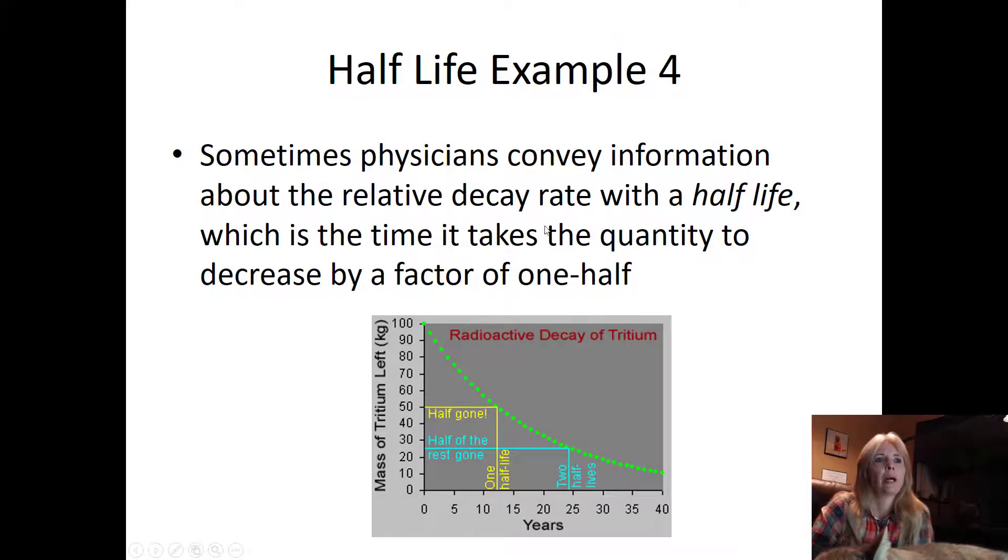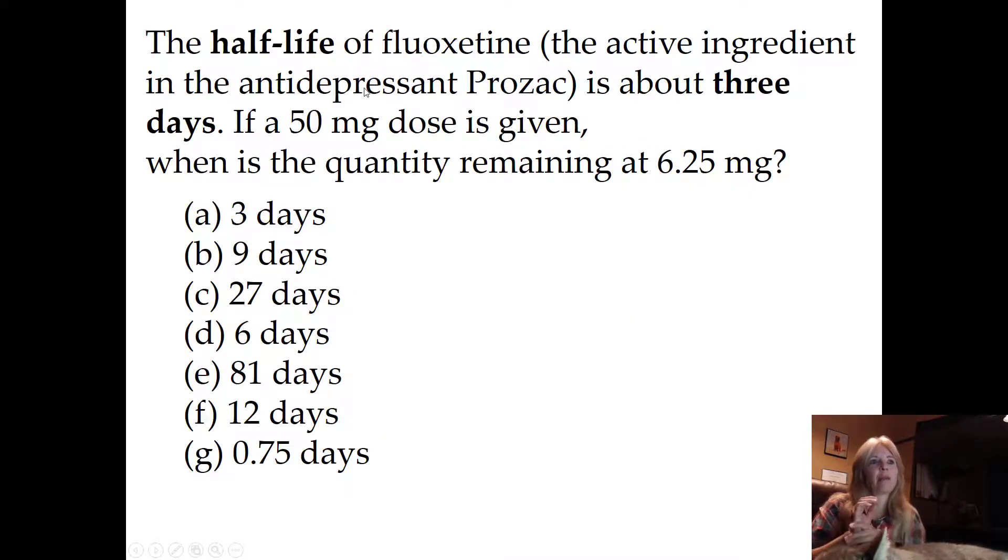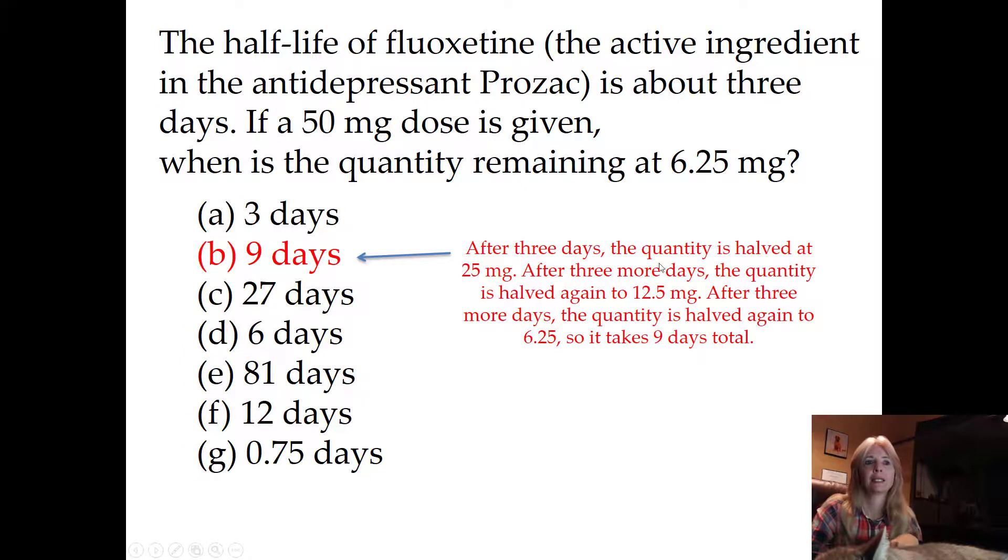All right, a half-life. It's kind of funny because a lot of students say half-lives are hard, but you're just taking the half, decreasing in this case by a factor of one-half over and over. The half-life of this ingredient in Prozac is about three days. If a 50 milligram dose is given, when is the quantity remaining at 6.25 milligrams? Half-life means it's been cut in half. If I have 50, I'm at 25. I have it again, I'm at 12.5. I have it again, 6.25. This is happening every three days, so three, six, nine. It takes nine days total.